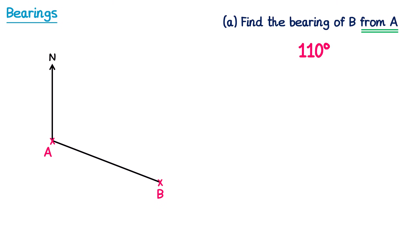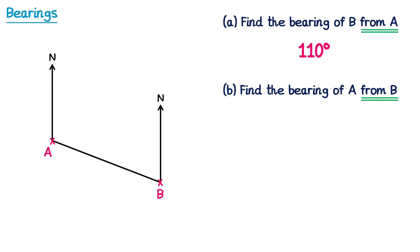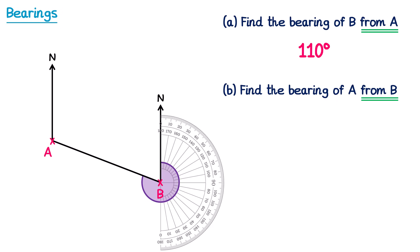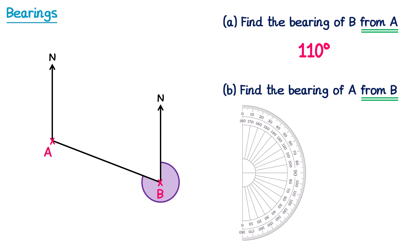For a second part to this question, let's find the bearing of A from B. Since it says from B, we need to now draw the north line at B. And then we're going to imagine we turn in a clockwise direction until we face A. This angle is a little bit more difficult to measure, and there are a couple of ways of doing it. If we place the protractor on in the usual way, we can see that the protractor does not have enough degrees to measure this angle. So one way is to draw a straight line down from point B. We can now see that to the right hand side of point B, we have half a turn, which is 180 degrees. So we can just work out the part on the left, and then add this to 180 to get the total angle.